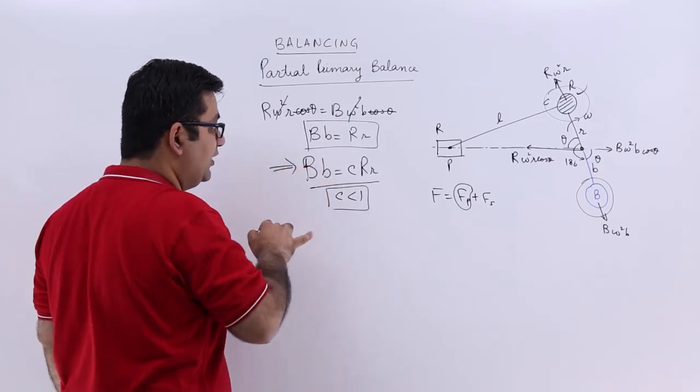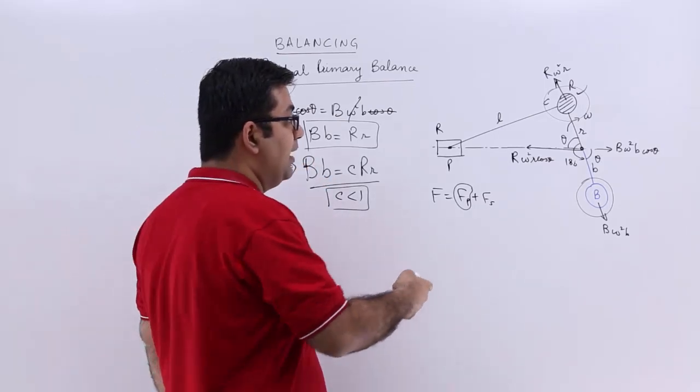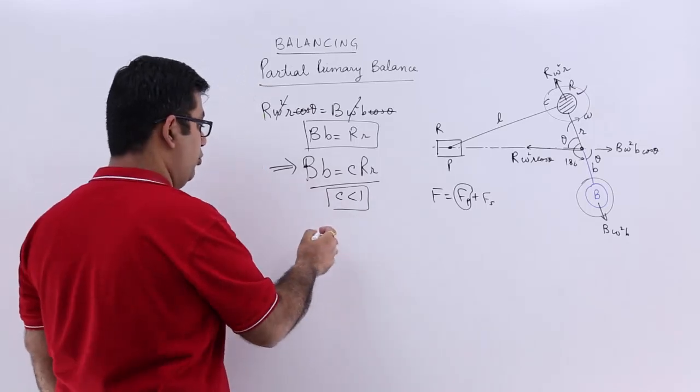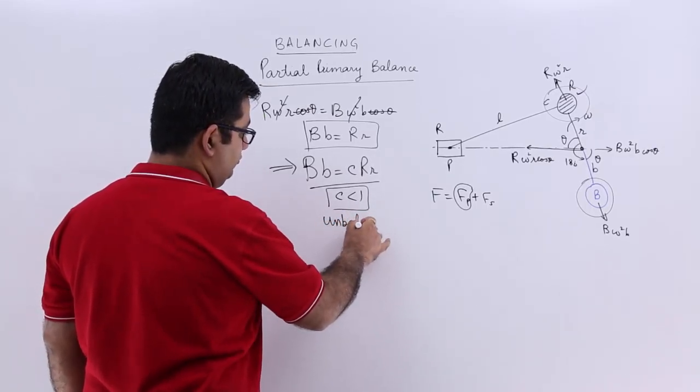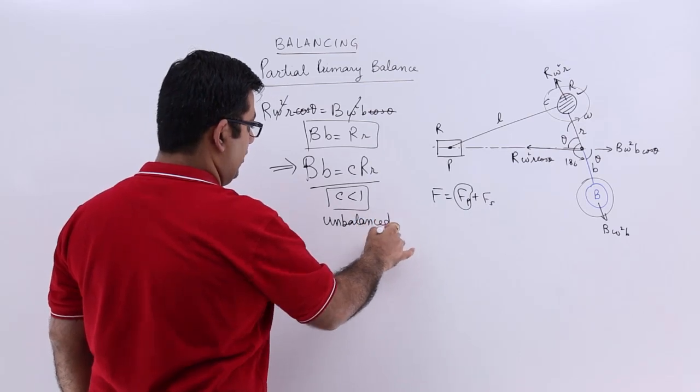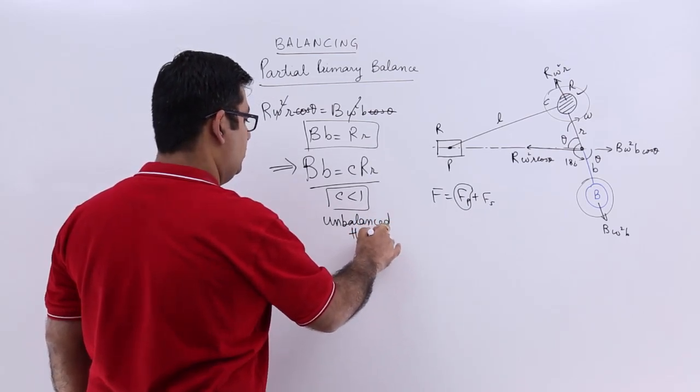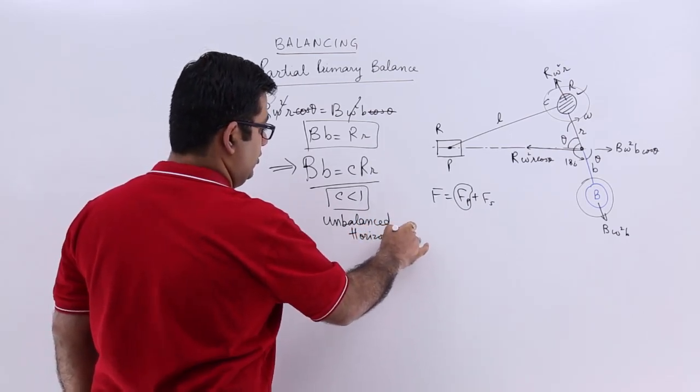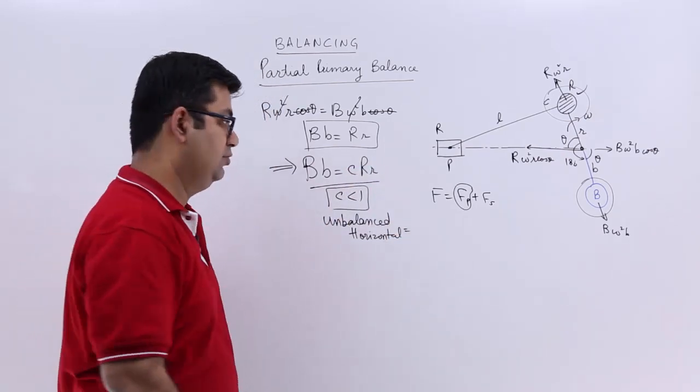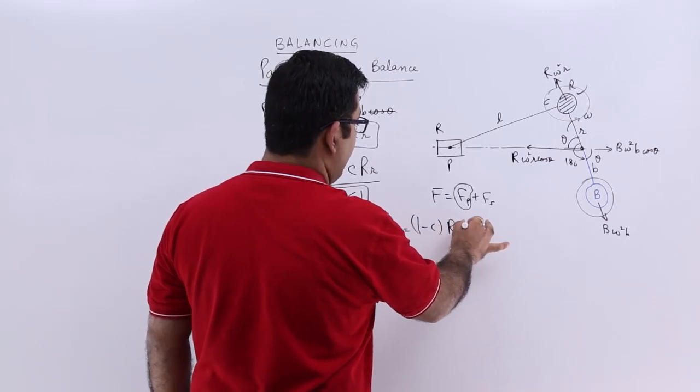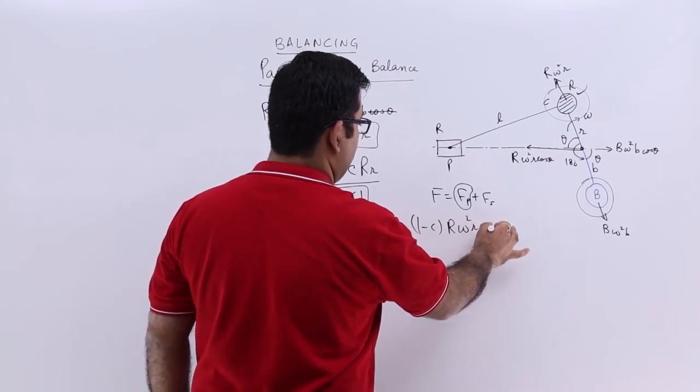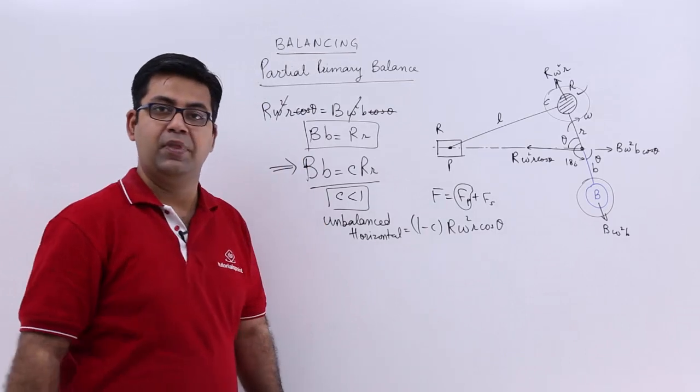If this much is balanced, then the reduction in the unbalanced horizontal force, or you can say unbalanced horizontal force, so c has been already taken care of. So the amount left will be 1 minus c. You will have R omega square r cos theta.